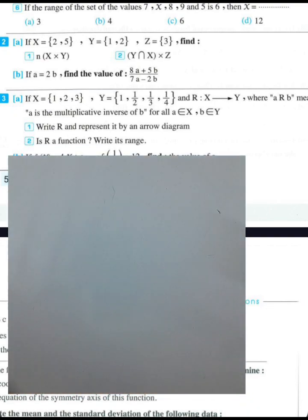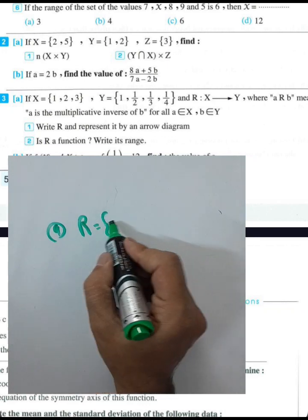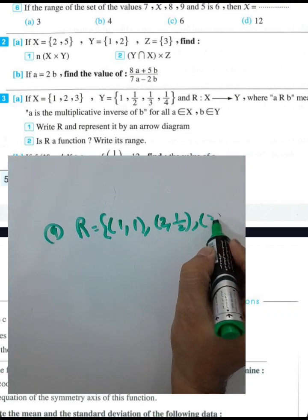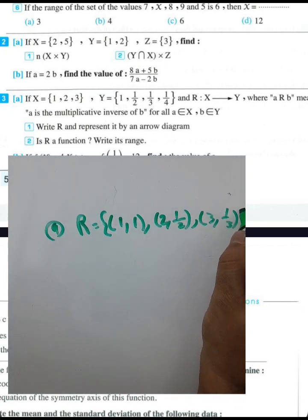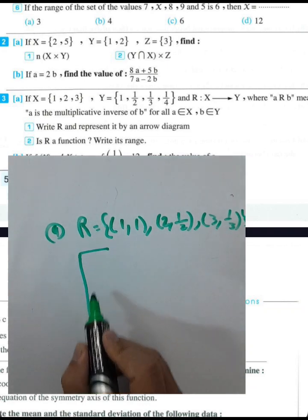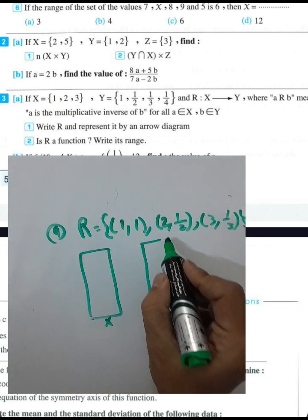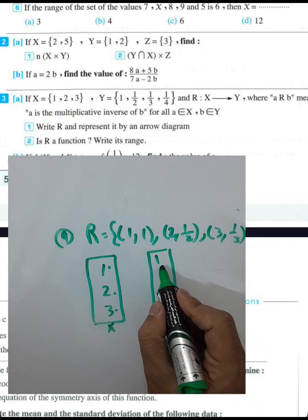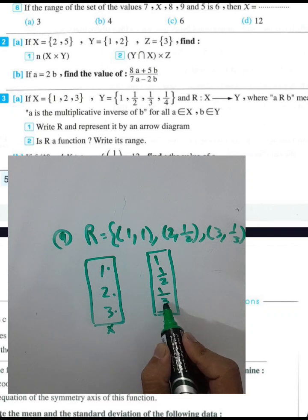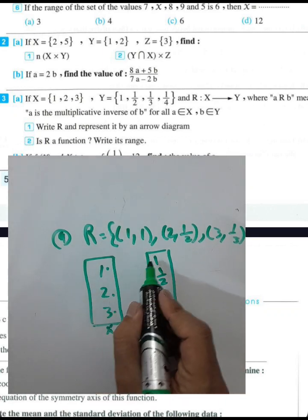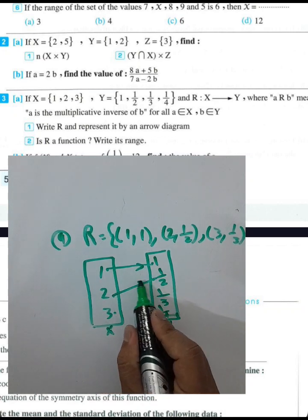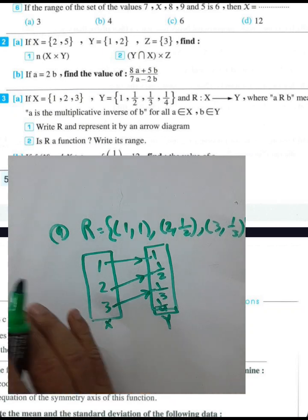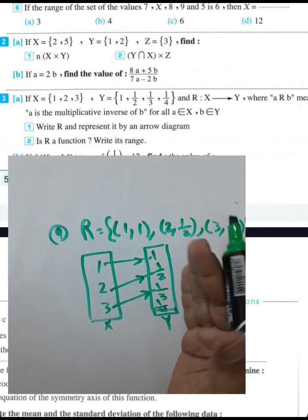The relation: a is the multiplicative inverse of b, where x has values {1, 2, 3} and y has values {1, 1/2, 1/3}. We can draw a diagram between the two sets: 1 maps to 1, 2 maps to 1/2, and 3 maps to 1/3. R is a function because each element in x has only one image in y.